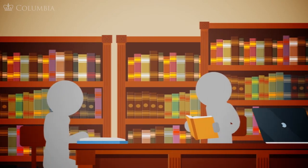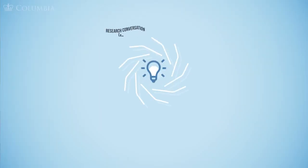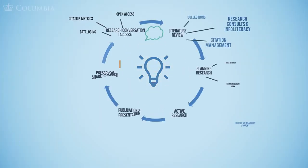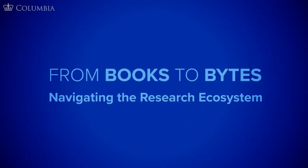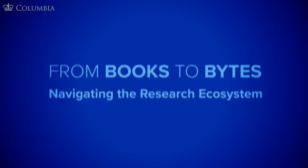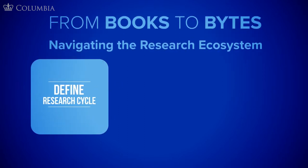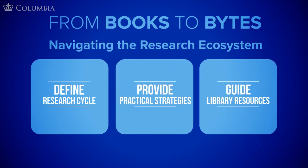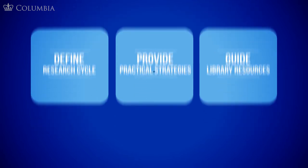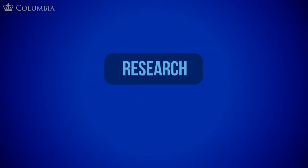Whether you have a looming deadline for a major research project, whether you're an undergrad writing your first paper or an established author with multiple publications, navigating the research ecosystem can be daunting. That's why the libraries at Columbia University have created 'From Books to Bytes: Navigating the Research Ecosystem,' a set of online resources that define the research cycle and guide you through the vast resources available to you at Columbia.